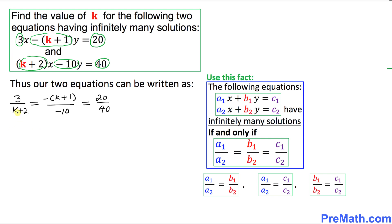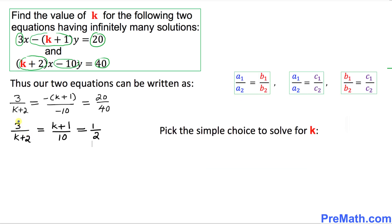Now let's simplify these ratios. The negative signs cancel, giving us 3 over k plus 2 equals k plus 1 over 10 equals 20 over 40. The fraction 20 over 40 reduces to 1 over 2. In the next step, I'm going to pick a simple pair to make my job easier.